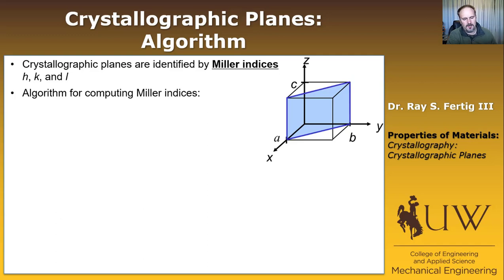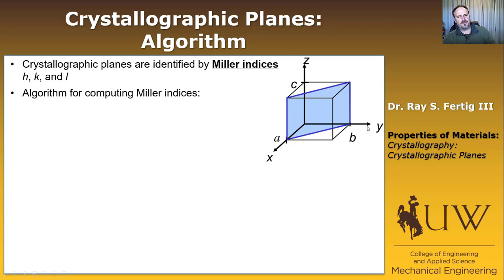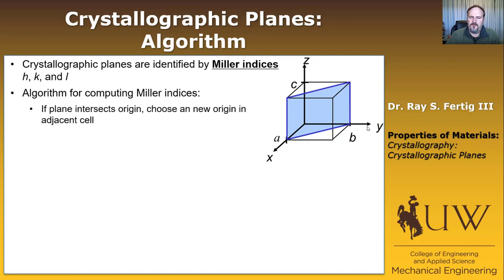Let me jump right in and talk about how we compute the Miller indices for a plane. This blue plane resides in a crystal structure where the crystal axes are orthogonal with lengths a, b, and c in the x, y, and z directions respectively. Step one: examine if the plane intersects the origin. This blue plane does not intersect the origin, so we don't need to do anything.